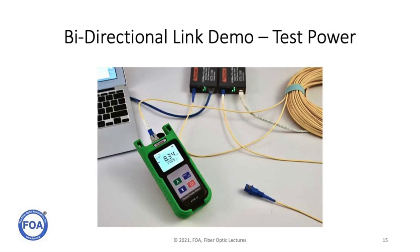Let's test our link. We'll open the link and attach a fiber optic power meter, which we also bought online for a very low price. We're measuring a power level of minus 8.34 dBm from the transmitter of one of the media converters. We also checked the other direction and got a similar power level, showing that both transmitters are transmitting at the same time over the same fiber — that's how the bidirectional link works.